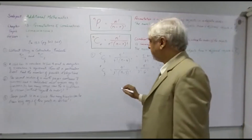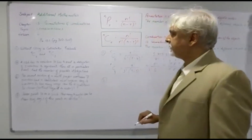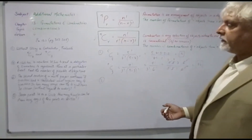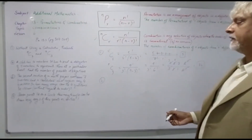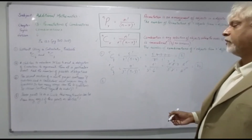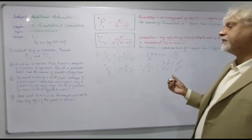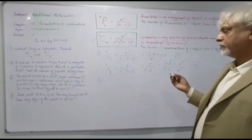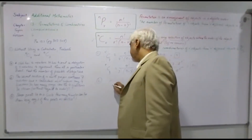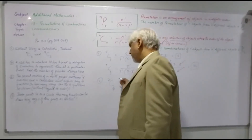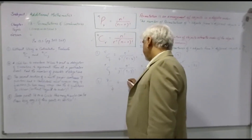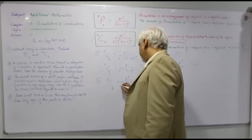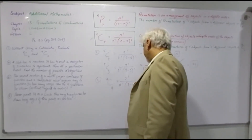Moving on to question two. The second section of a math paper contains 7 questions and a candidate must answer any 4. In how many ways can the 4 questions be chosen? Out of 7 questions, 4 need to be answered, so we use C(7, 4): 7 factorial over 4 factorial times (7 minus 4) factorial.